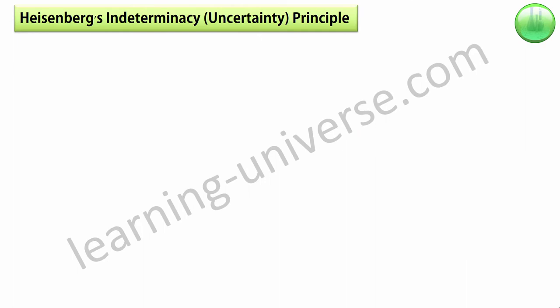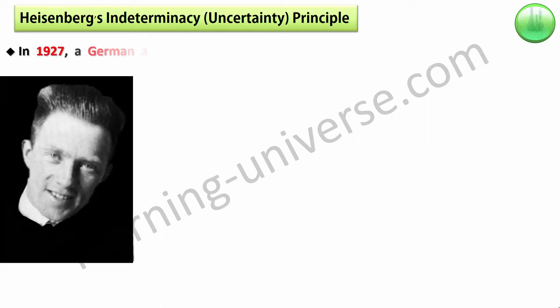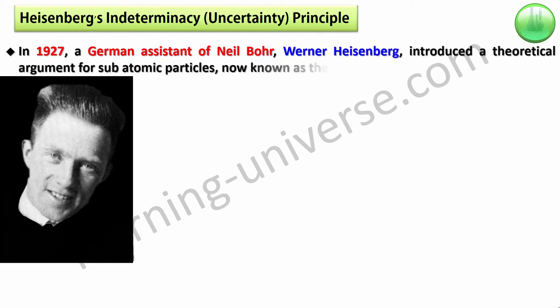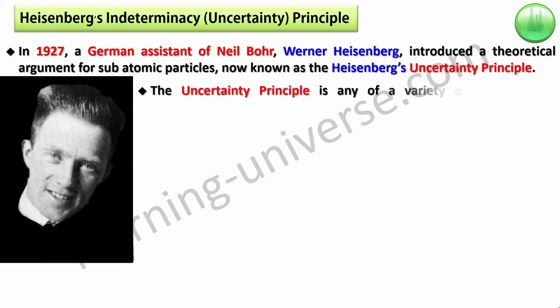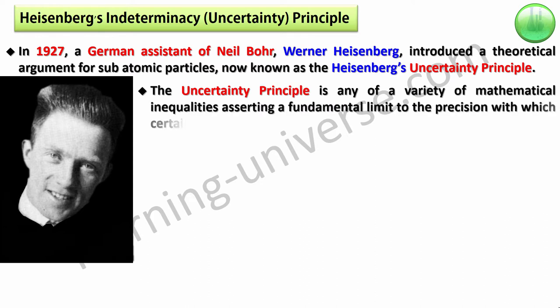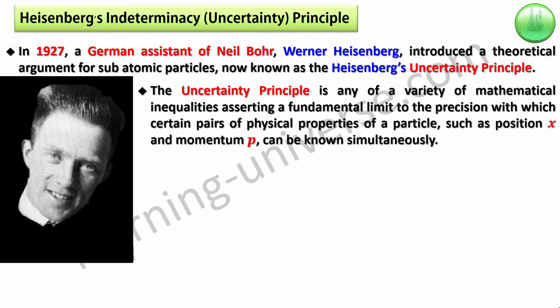So let's start with Heisenberg's uncertainty principle. In fact, I prefer to call it the Heisenberg's indeterminacy principle rather than uncertainty. In 1927, a German assistant of Niels Bohr working in Bohr's Institute of Physics at Copenhagen, Werner Heisenberg, introduced a theoretical argument for subatomic particles now known as Heisenberg's uncertainty principle. The uncertainty principle is any of a variety of mathematical inequalities asserting a fundamental limit to the precision with which certain pairs of physical properties of a particle or matter wave particle, such as position X and momentum P, can be known simultaneously.